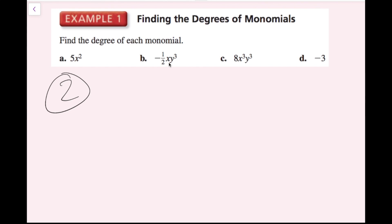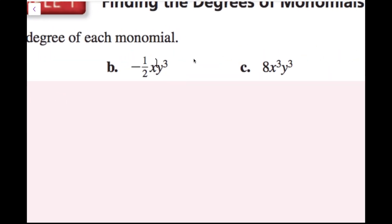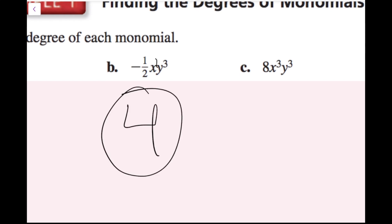For the next one, there are two variables. We can ignore the coefficient when finding the degree. The x has no written exponent, so its exponent is 1, giving x to the 1 and y to the 3. Adding these: 1 plus 3 is 4, so this is degree 4.